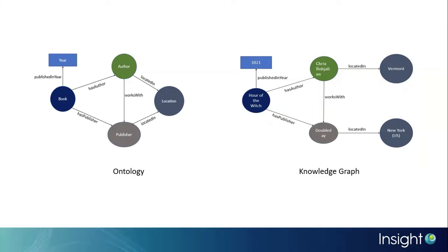The figure on the left shows an ontology with generalized terms. That is, a class 'book' is linked to another class 'author' by the relation 'has-author'.